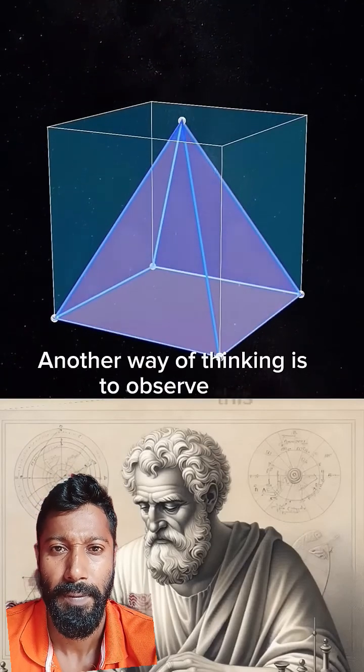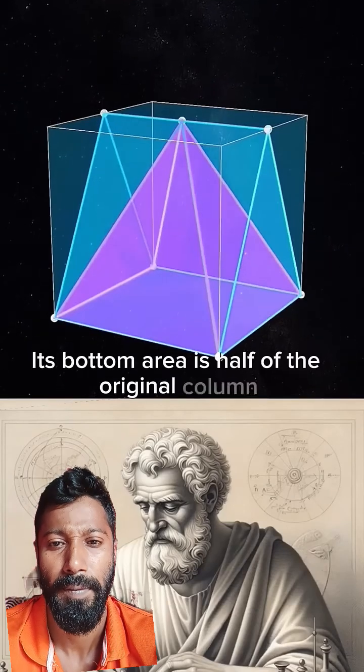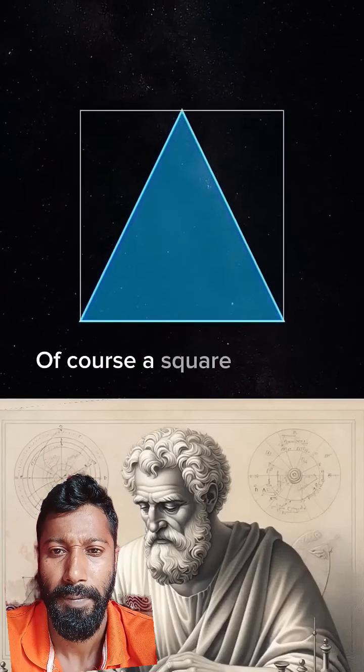Another way of thinking is to observe this triangular prism. Its bottom area is half of the original prism, because the area of the triangle is half of the square. Of course, a square itself is a quadrilateral.